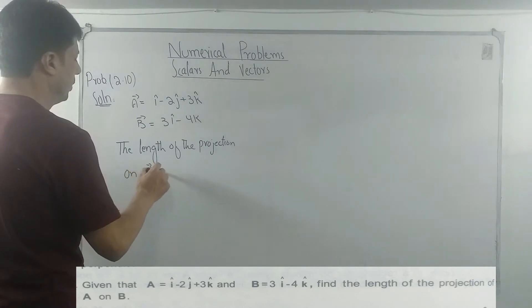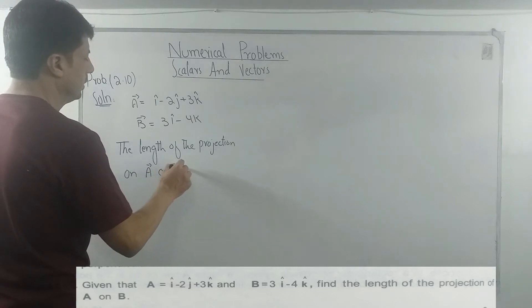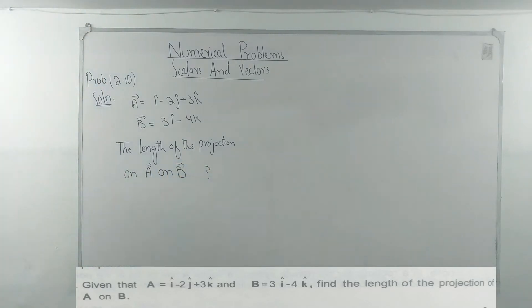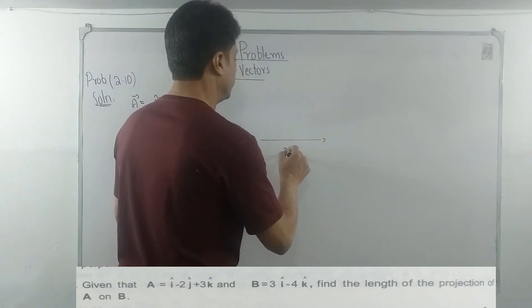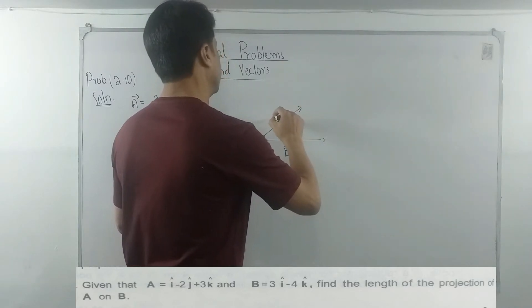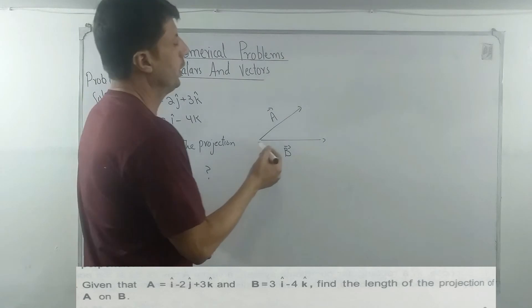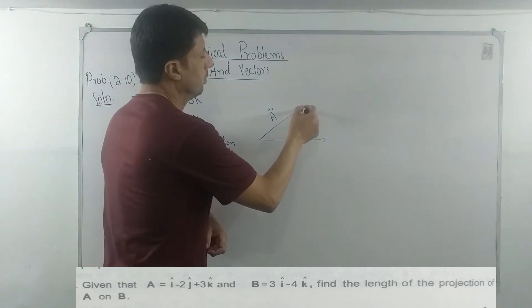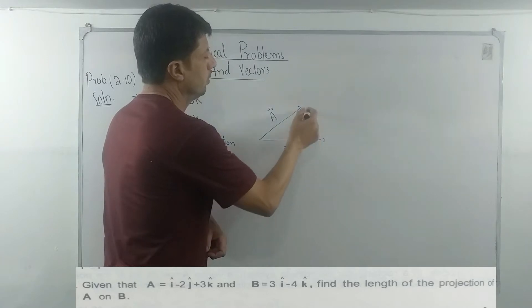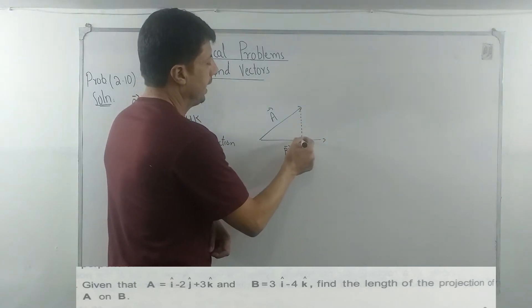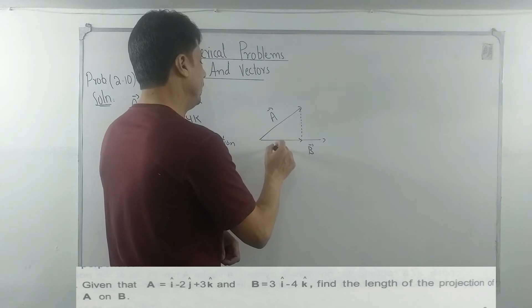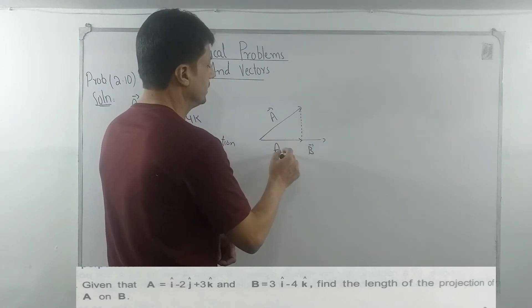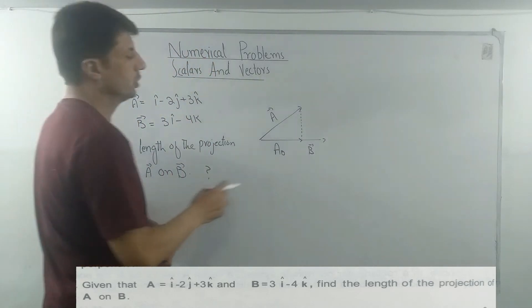The length of the projection of a on b is a·cosθ. You can see here: it is vector b and it is vector a. From the tip of a dropped perpendicularly onto b, we get the component in the direction of b, which we call ax. This is the component of vector a in the direction of vector b.